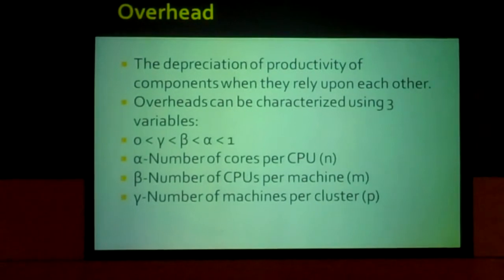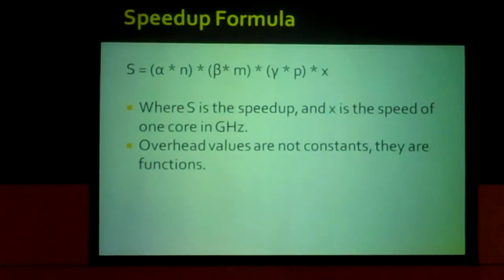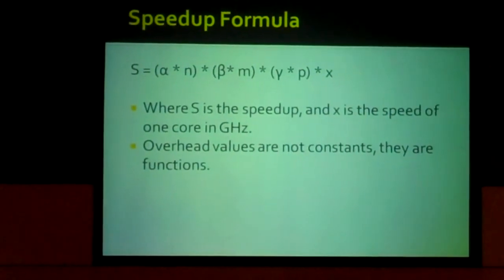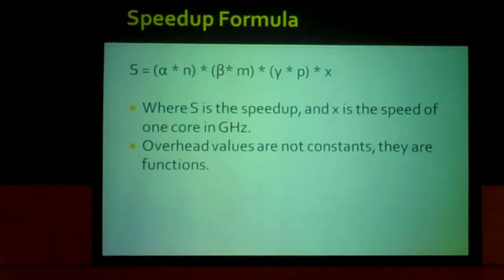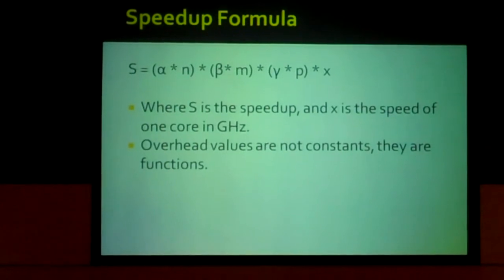And this is the formula. You just multiply everything together. And then you have X which is the speed of one core in gigahertz. And from that you get speedup.